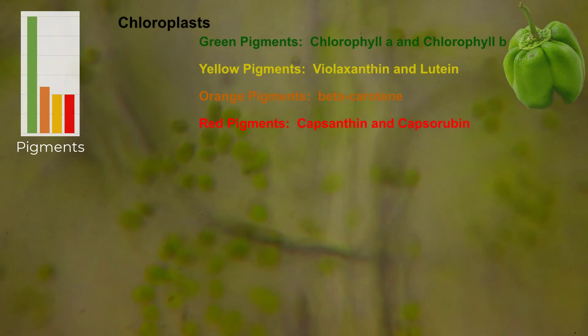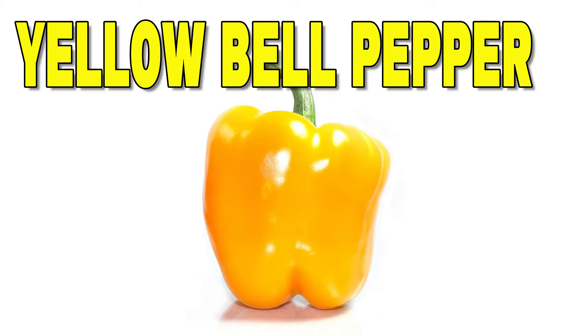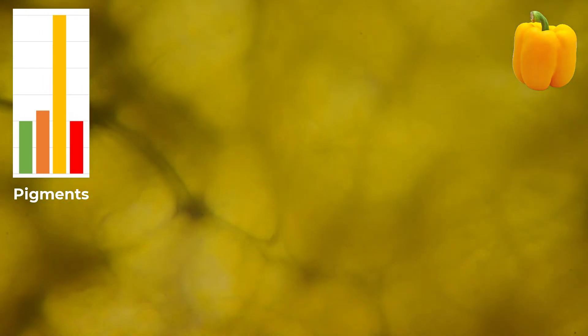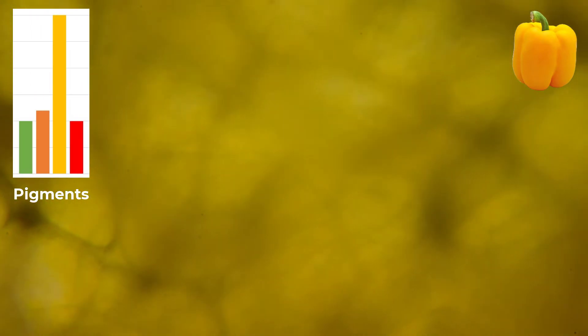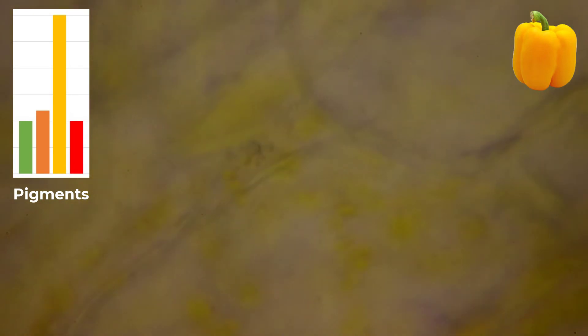These green pigments play a major role in the photosynthesis process. When we see the cells of the yellow bell pepper, the chloroplasts — where the green pigment concentration was very high — are now called chromoplasts.